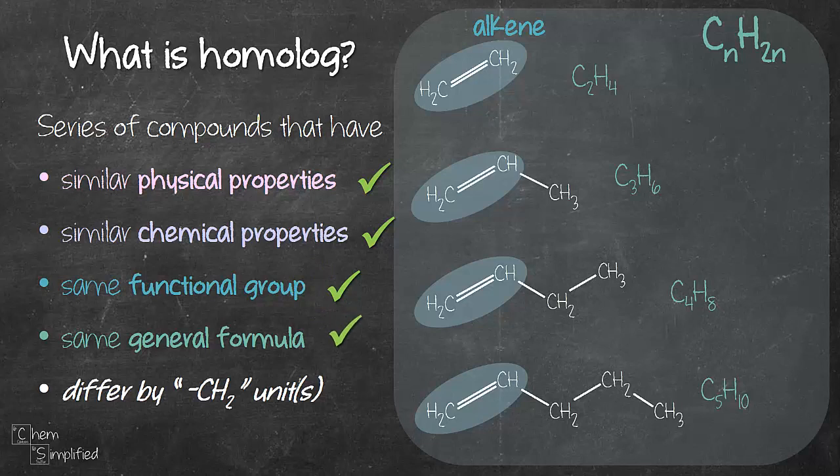So if n is 2, then H would be 4. If n is 3, then H would be 6 because 2 times 3 equals 6. So so far so good. Now the last point is they differ by a CH2 unit, and like I mentioned earlier, this is the most important point because it needs to fulfill all this and at the same time each of these compounds needs to be different by only a CH2 unit. So the first and the second compound is different by CH2, second and third CH2, third and fourth CH2.